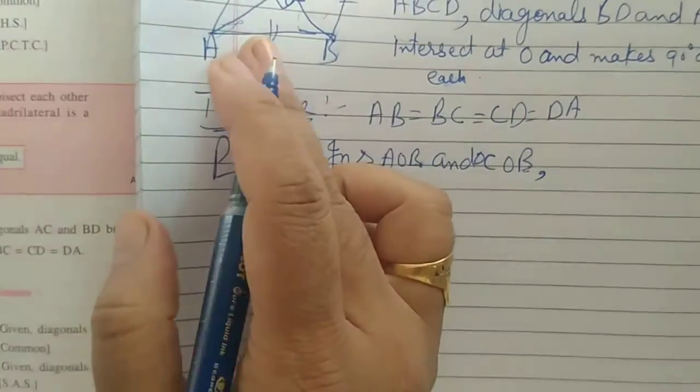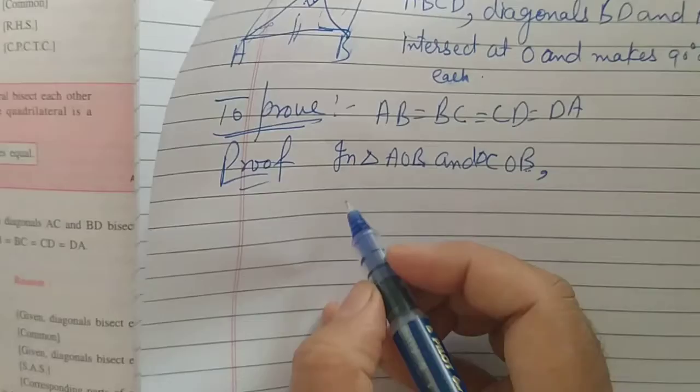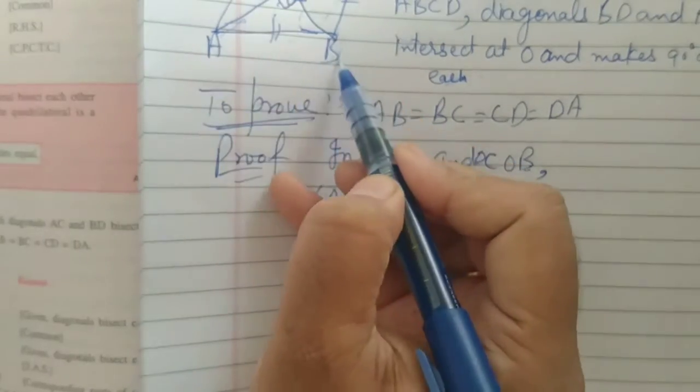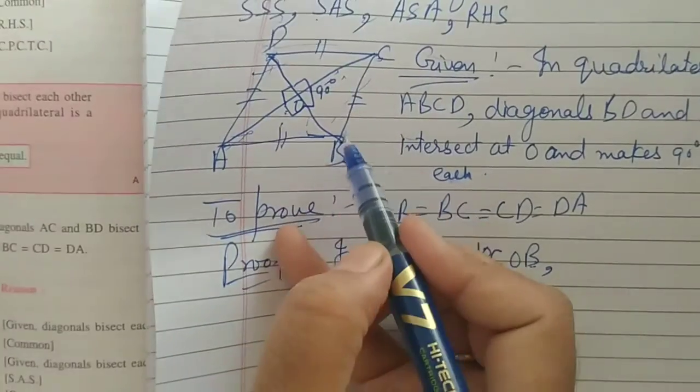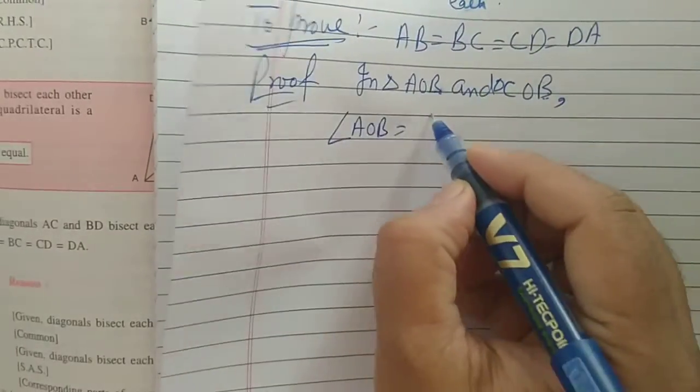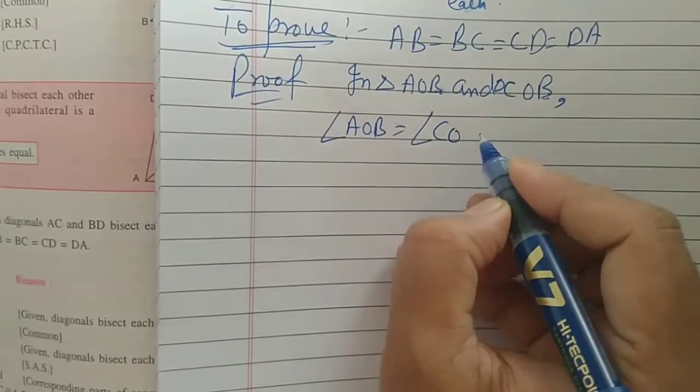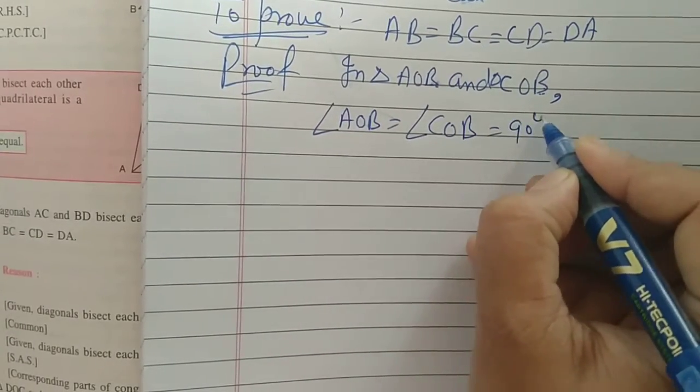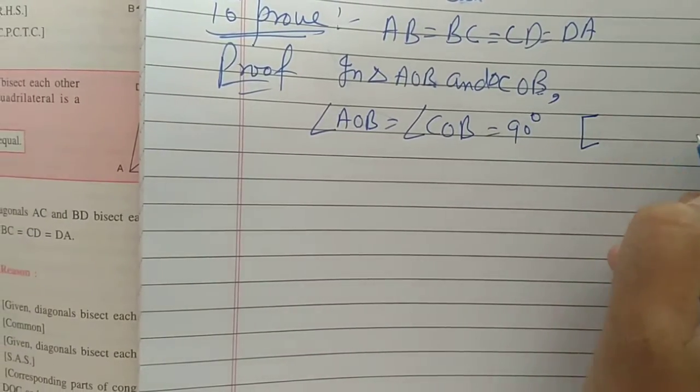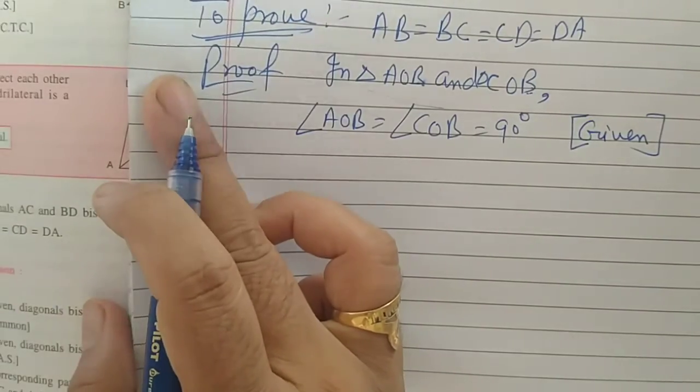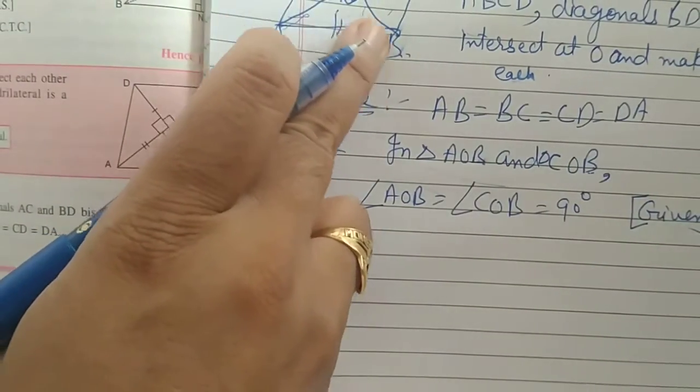So, what is given here? This angle is 90 degree. You will write angle AOB. This one angle AOB. Here what is given? Angle COB. See, you have to make the three condition equal. COB is equal to 90 degree. In the bracket you will write reason. What is the reason? It is given.